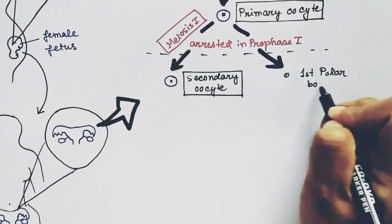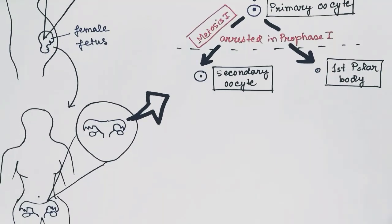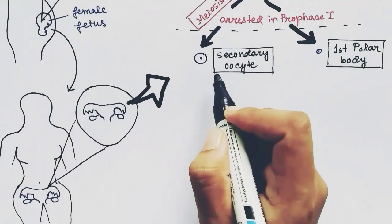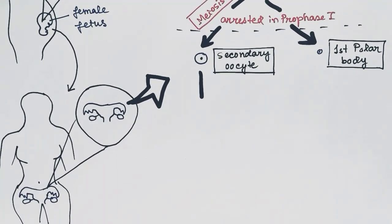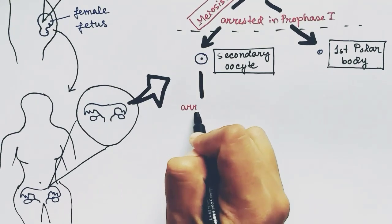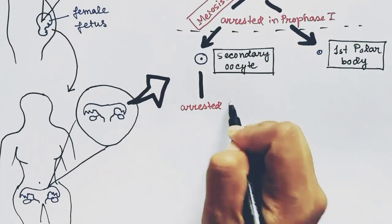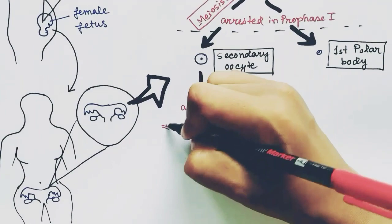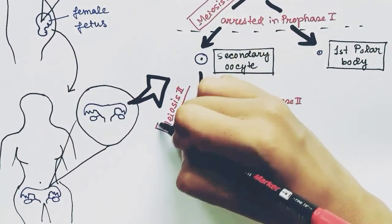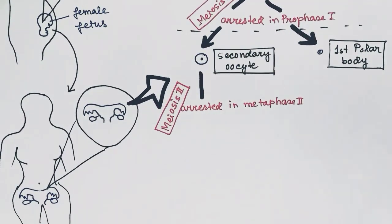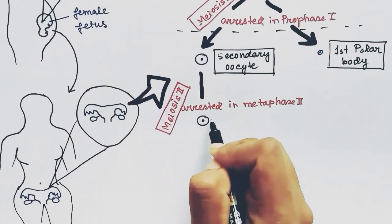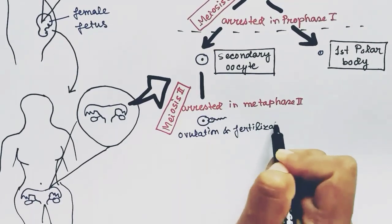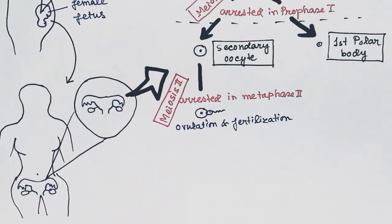Now the secondary oocyte goes through meiotic division two. In this process it gets arrested again in metaphase two of meiotic cell division two. It remains arrested until ovulation and fertilization occur.